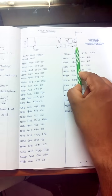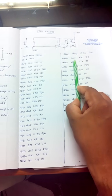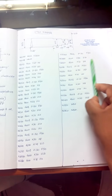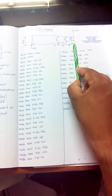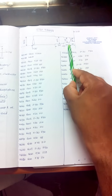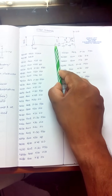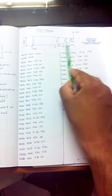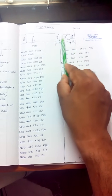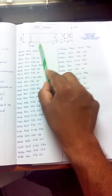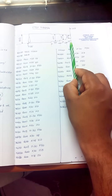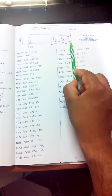After cutting diameter 23, the tool is retracted to X28 Z10. Then N110 G00 X22 Z0 — tool moves to X22 Z0. N120 G01 Z minus 50, feed 50 — tool moves to Z minus 50. Now the diameter of this portion is 22 millimeters over a total length of 50 millimeters. After cutting 22mm diameter, tool is retracted to N130 G00 X30 Z10.